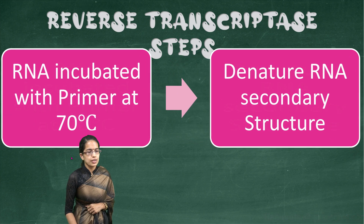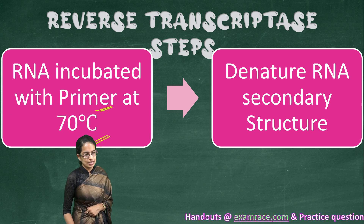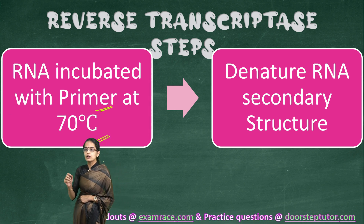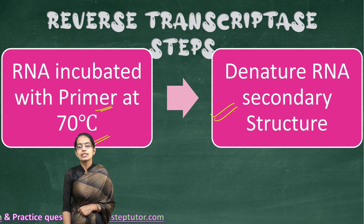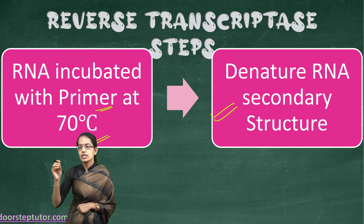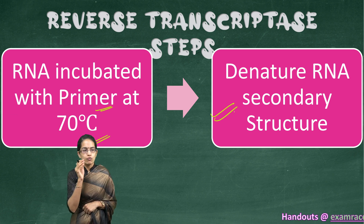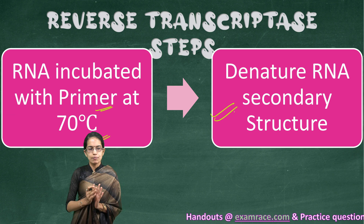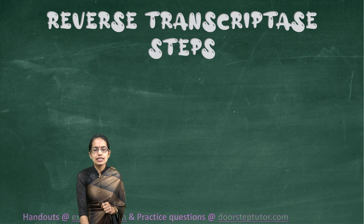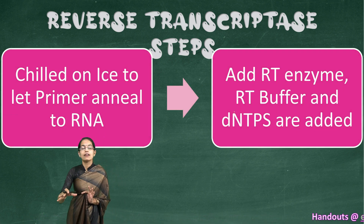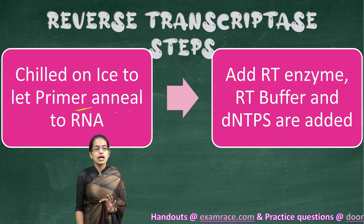The first step is: the RNA gets incubated with the primer at 70 degrees Celsius. This is the point where you are trying to denature the RNA. Once the RNA secondary structure is denatured, it is chilled on ice with the primer. So first, RNA is incubated with the primer at 70 degrees Celsius, it gets denatured, and then it is chilled on ice so the primer can anneal to the RNA.